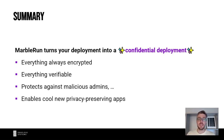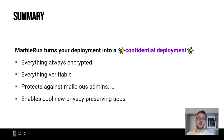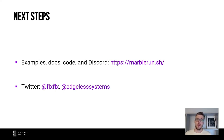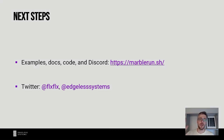That was my quick introduction to MarbleRun. To summarize: MarbleRun turns your existing deployment into a confidential deployment, keeping all your data encrypted at all times even during processing, and allowing you to verify the integrity and functionality of your deployment. Even better, it protects against very strong attackers like malicious Kubernetes admins, cloud admins, or data center workers, and enables cool new applications that preserve the privacy of your data sources. For next steps, check out MarbleRun.sh for code and further examples. If you have questions, join the Discord. You can also find me on Twitter at @flxflx. Let's keep in touch!